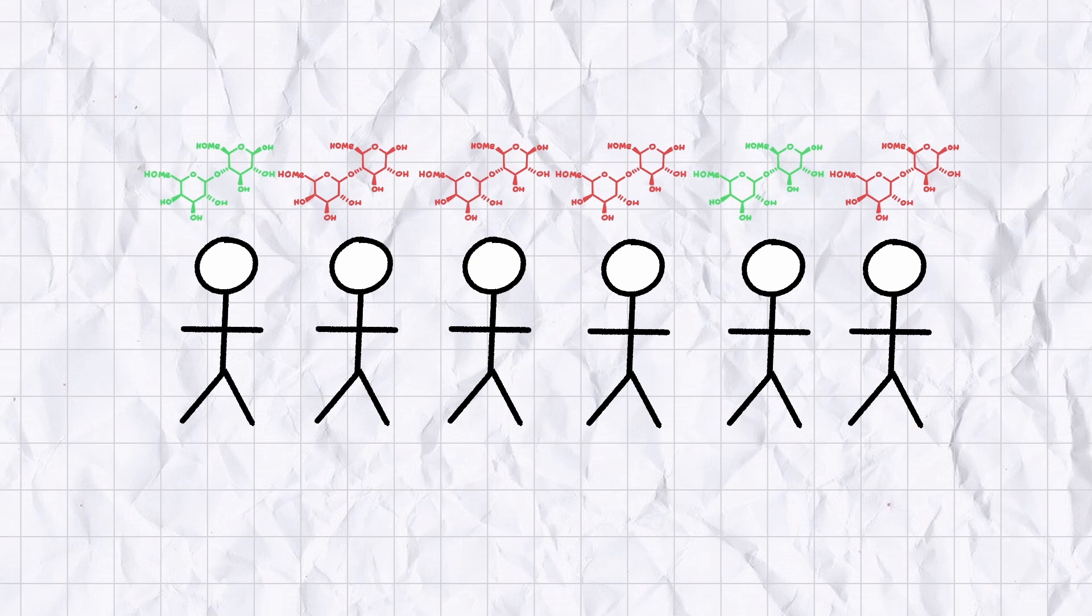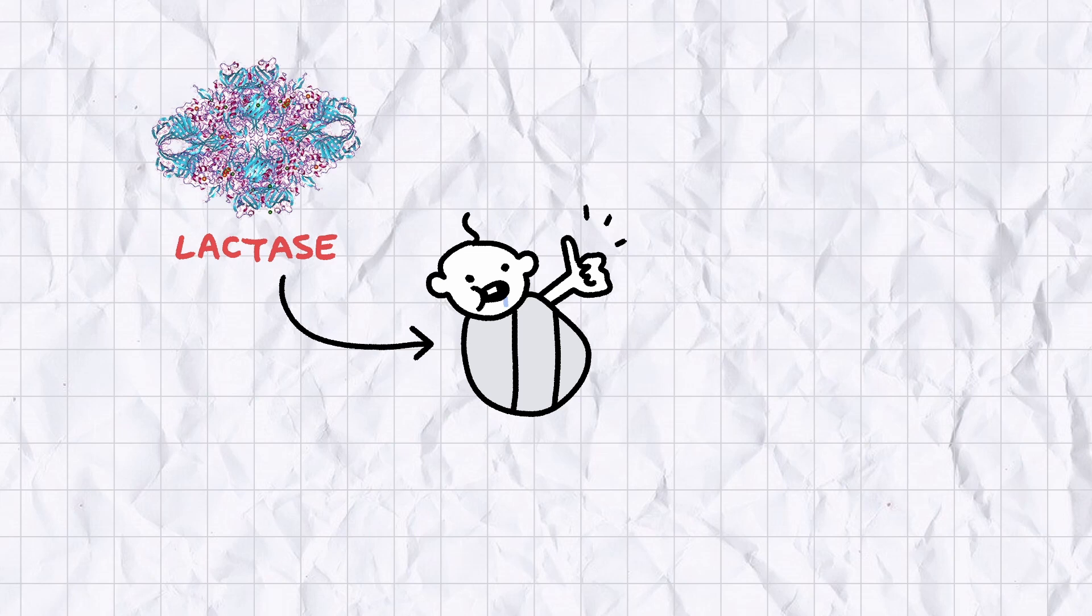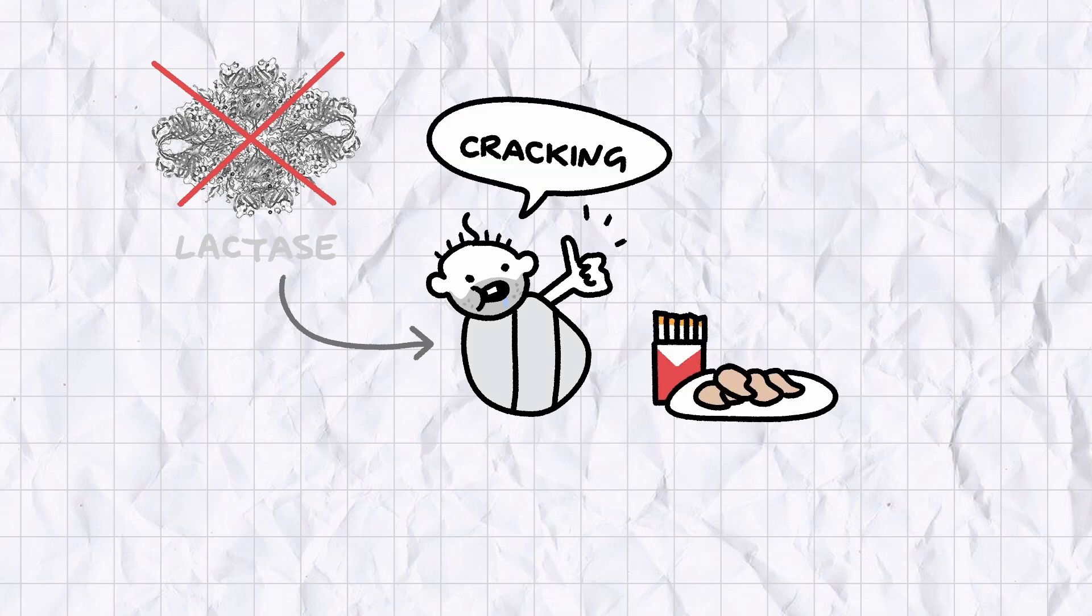The thing about lactose intolerance is, at least in adults, it isn't really a medical disorder in the technical sense. Practically all babies that survive early childhood can metabolize lactose in their mother's milk, because their bodies produce an enzyme called lactase. But as babies get older, the gene expression that allows for lactase production is meant to be switched off, as the baby gets weaned onto big people food like chicken nuggets and cigarettes.